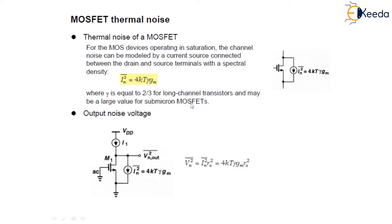This can be a large value for sub-micron MOSFETs. You can also assume γ equal to 1, but here in this case we will always say γ is equal to 2/3. For MOS transistors, how this noise spectral density is taken into account and how we can find the output noise voltage: Vn² = In²R0² = 4kTγgmR0².